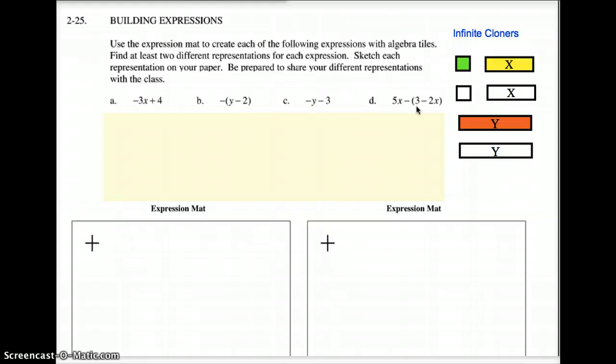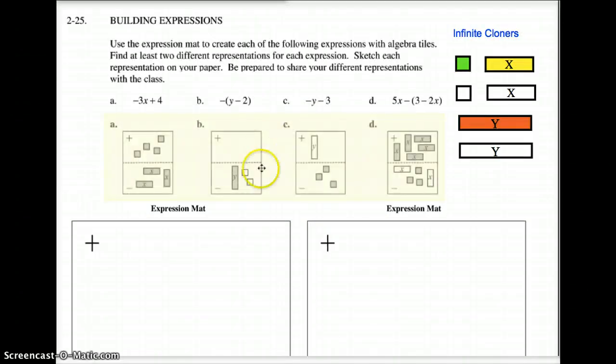Alright, we're back. Now, your answer should look like something like these. Here's what they did for this one, the minus 3x. They put down minus 3x. Plus 4. The plus was up here. The plus 4. Okay?